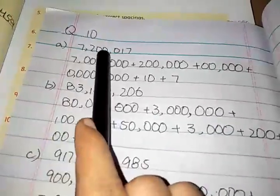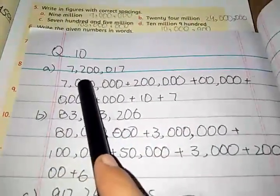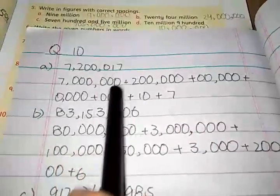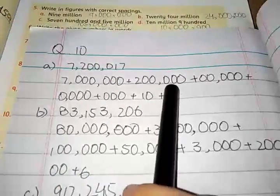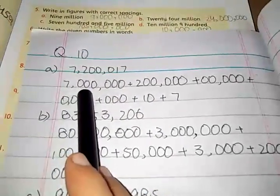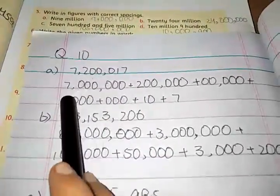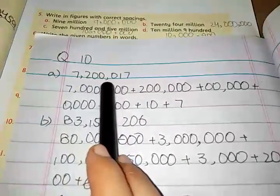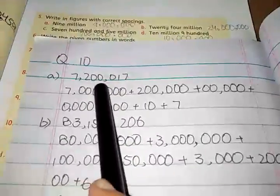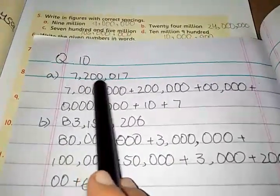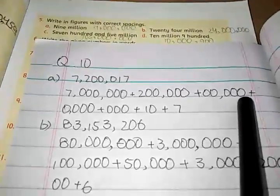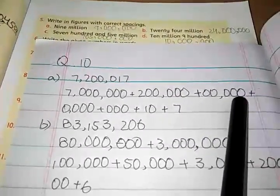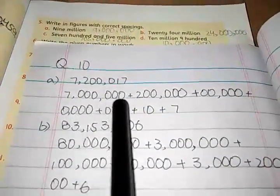First of all we have the number 7,200,017. So we write in expanded form like this: 7,000,000 plus 200,000. There is no digit on the ten thousands place value, so we write 5 zeros of ten thousands, plus again 1,000.